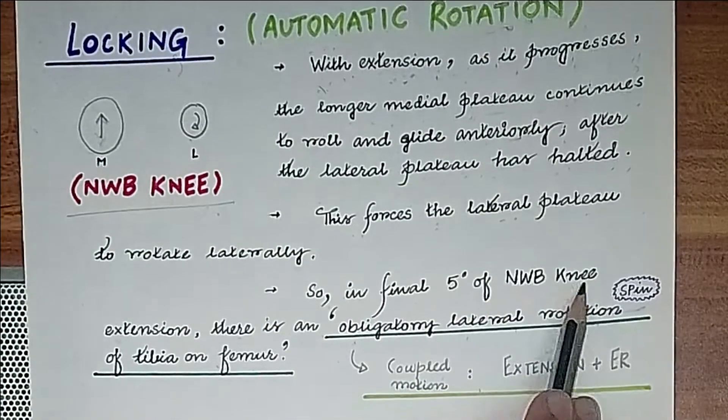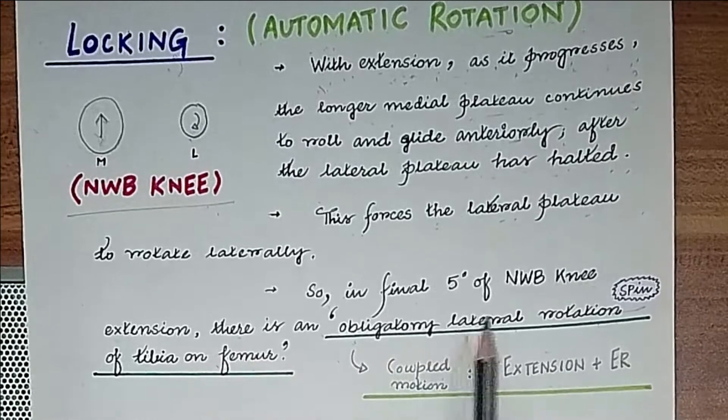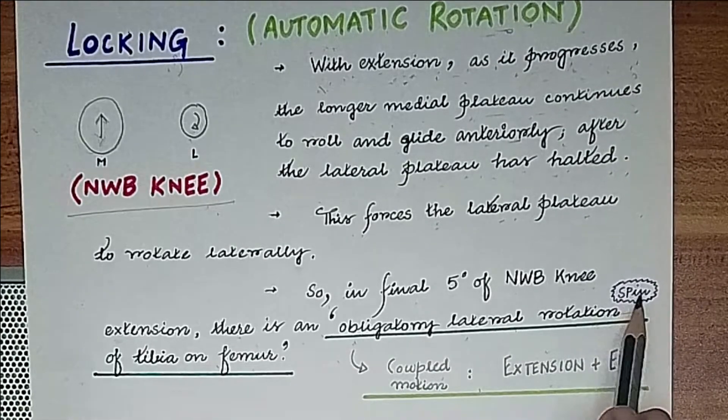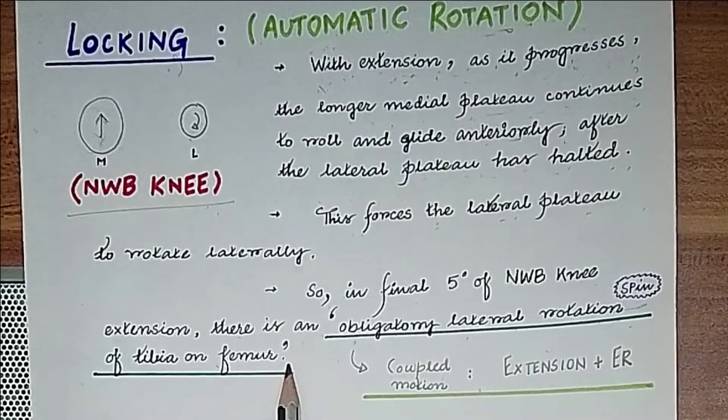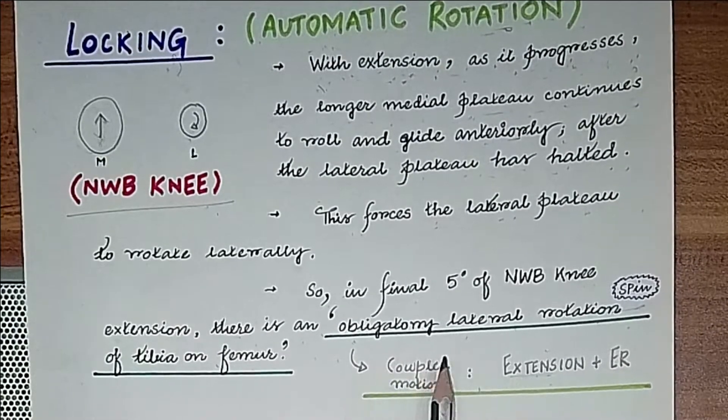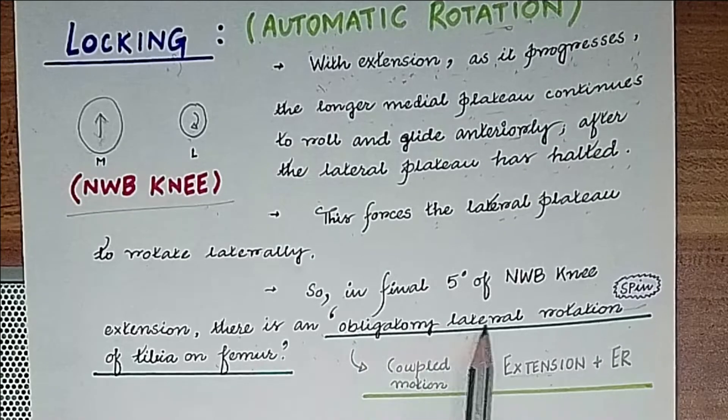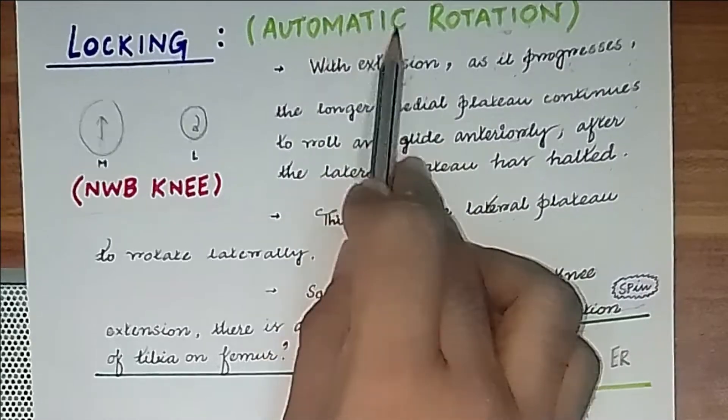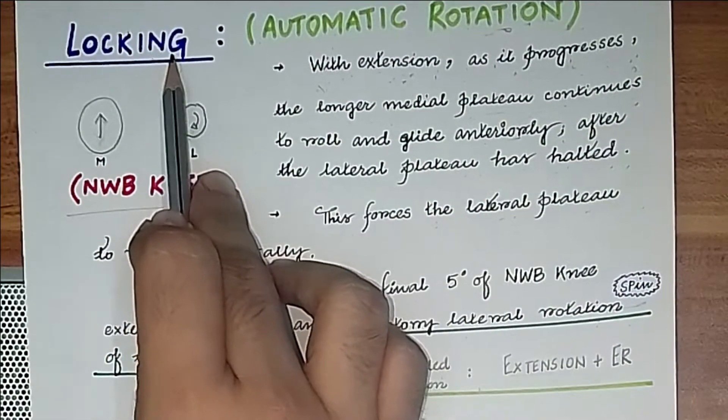So in the final five degrees of non-weight bearing knee extension, there is an obligatory lateral rotation or spin movement of tibia on femur. This external rotation during extension is also called coupled motion. This obligatory lateral rotation is called automatic rotation or locking of the knee.